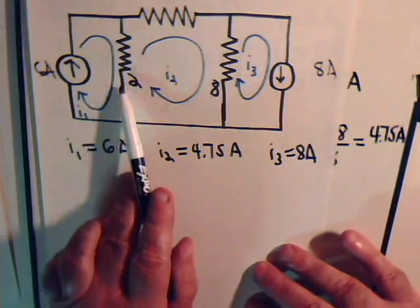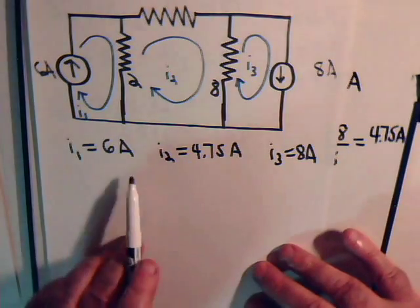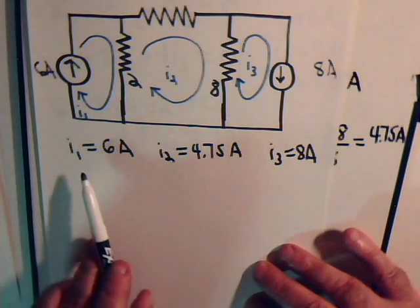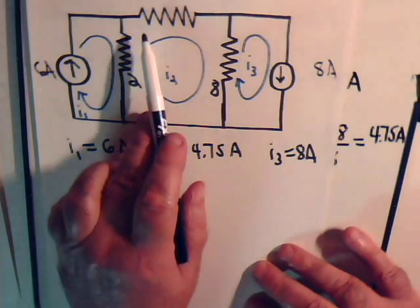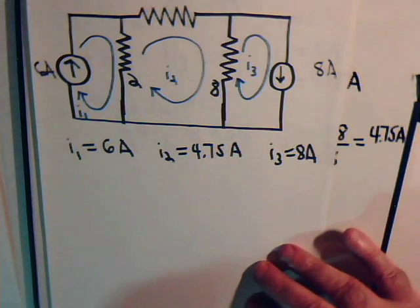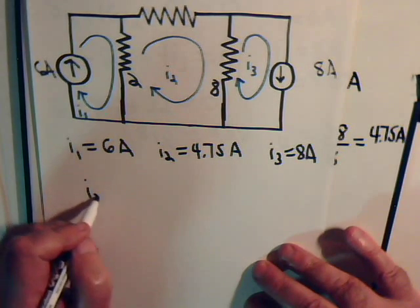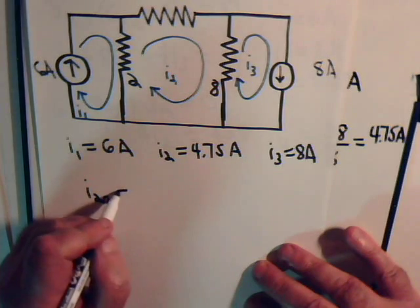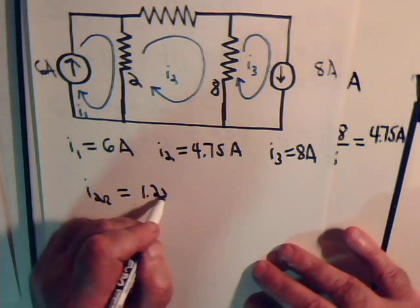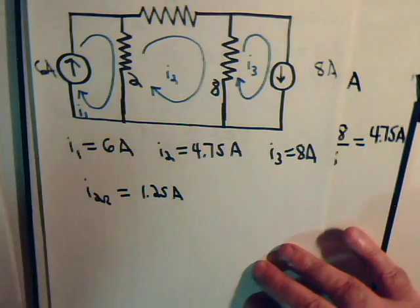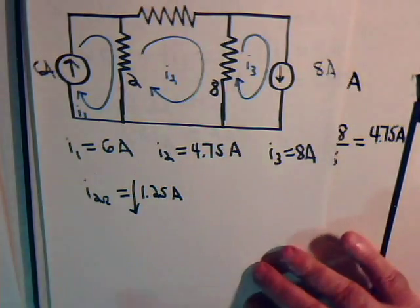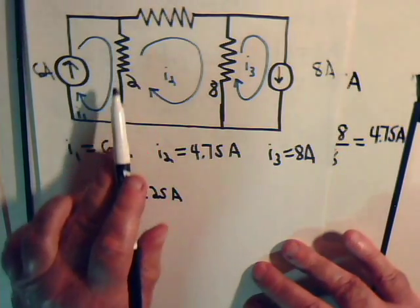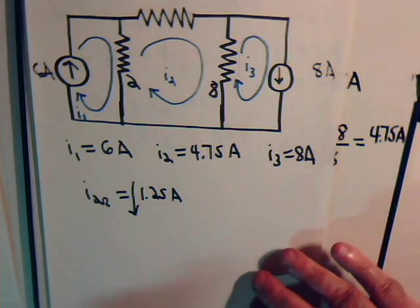For this resistor we have 6 amps going down from I1 and 4.75 amps going up for I2. So through that resistor then that's 1.25 amps going through it and that's going down. We know what is going through that resistor right here.